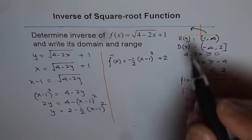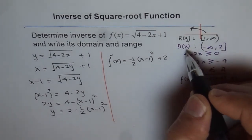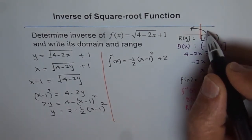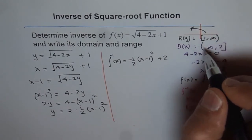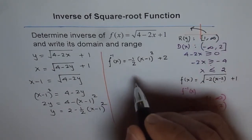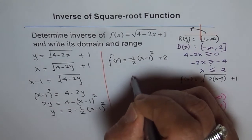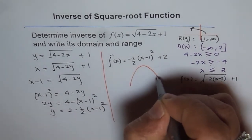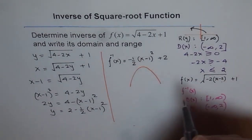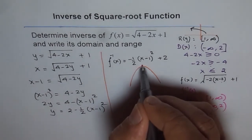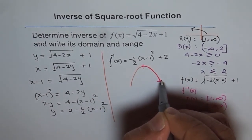This inverse is like this function — we don't have the full parabola. If we have a parabola, we are looking for only one part of it. This answer indicates only one part of the parabola; the solution is not the entire curve. We are looking for just this one part of the parabola.